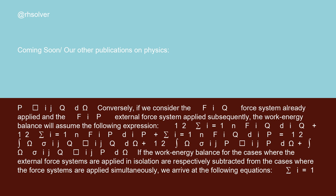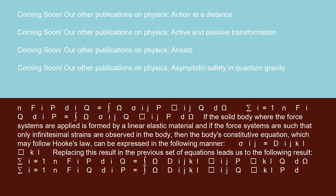If the work-energy balance for the cases where the external force systems are applied in isolation are respectively subtracted from the cases where the force systems are applied simultaneously, we arrive at the following equations: Σ(i=1 to N) F_iP · D_iQ = ∫_Ω σ_ijP · ε_ijQ dΩ, and Σ(i=1 to N) F_iQ · D_iP = ∫_Ω σ_ijQ · ε_ijP dΩ.